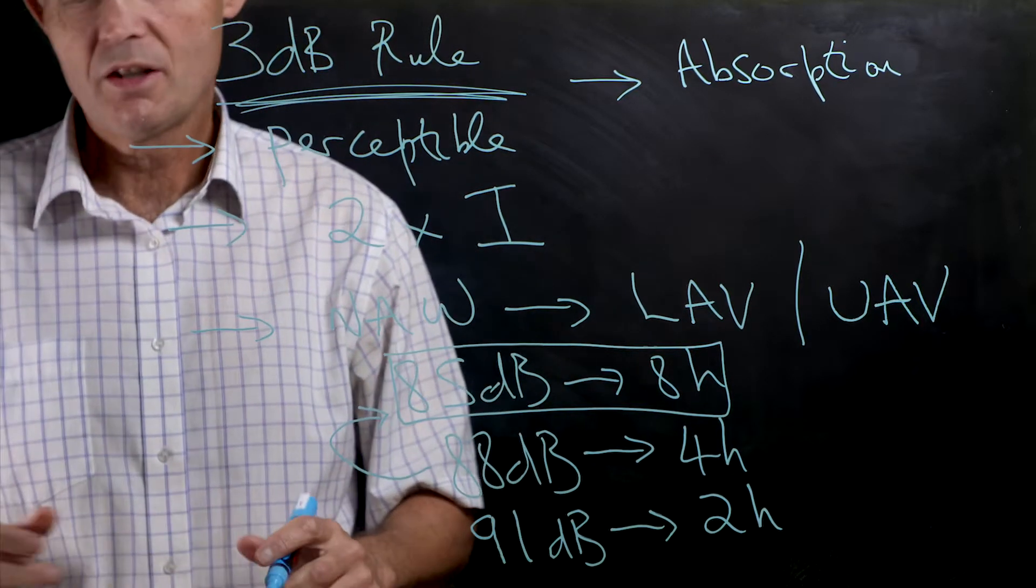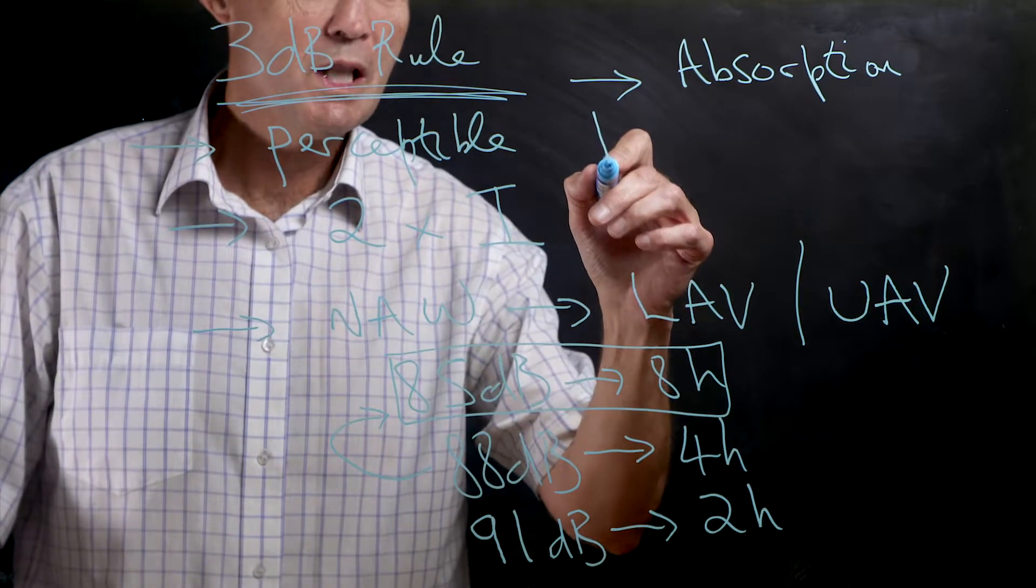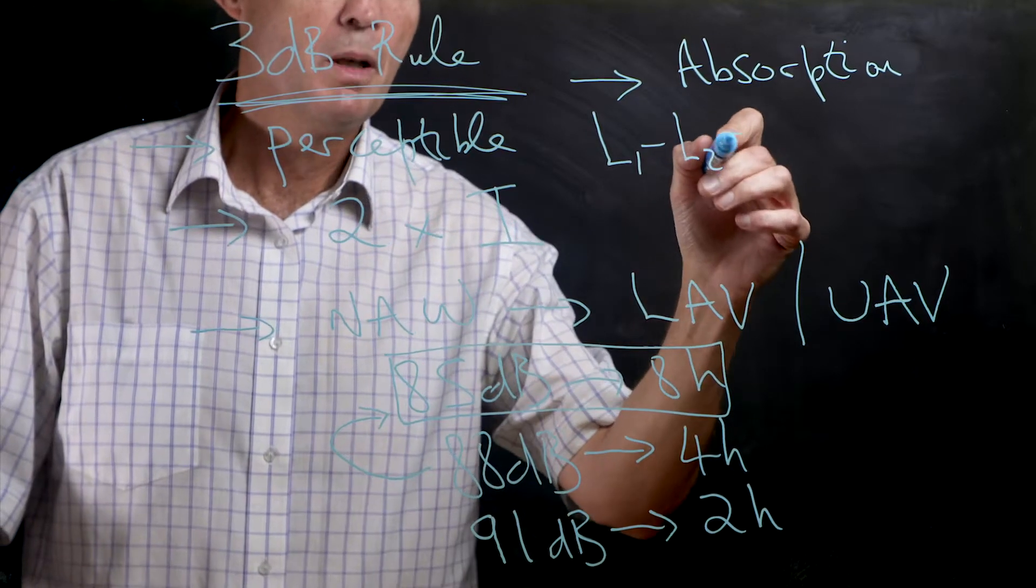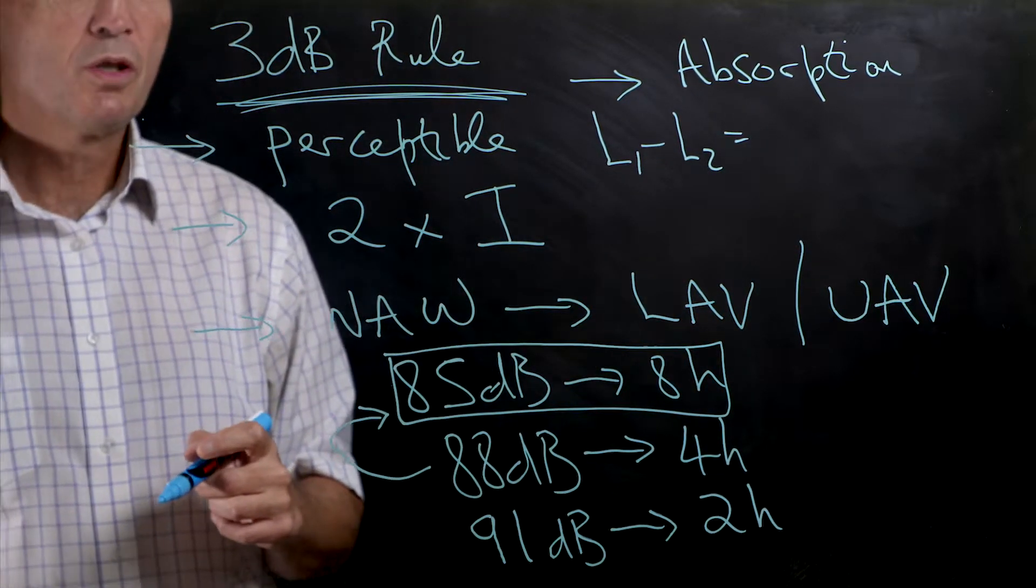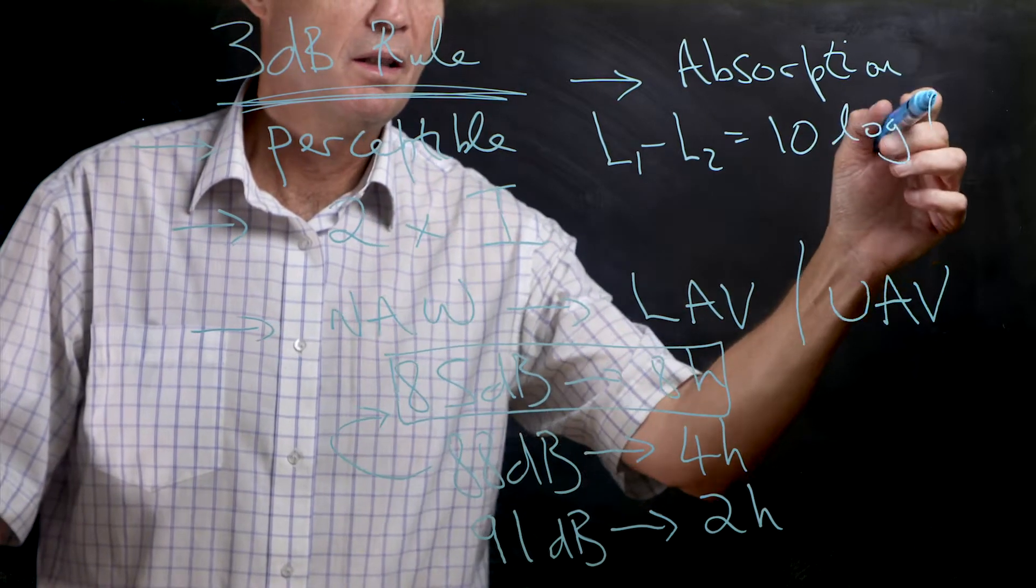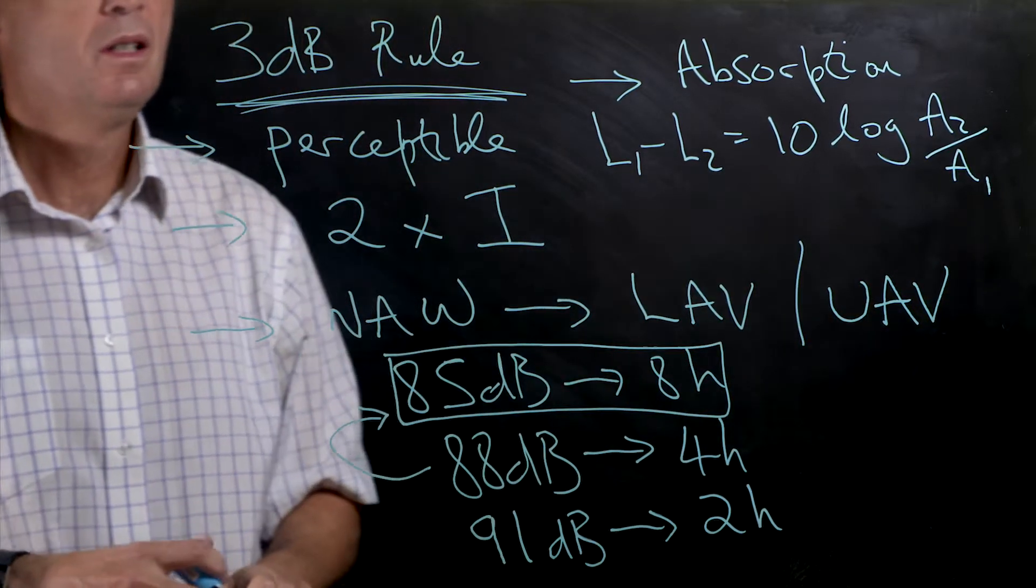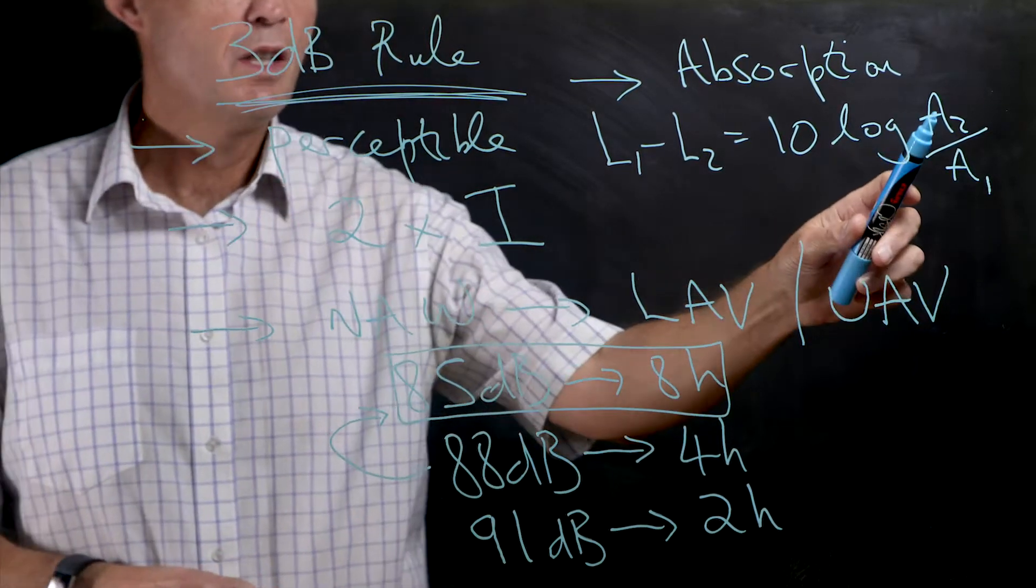We can actually work out what the change in noise level will be in the room by looking at what the change in absorption is. If we look at this formula here, which we've also covered in class, if the value of a2 is twice the value of a1...